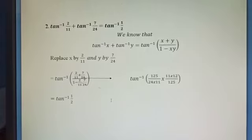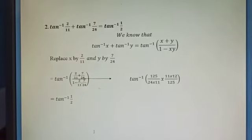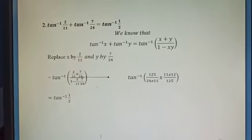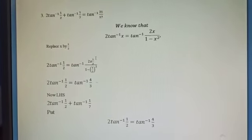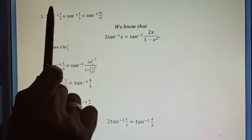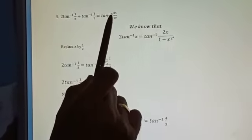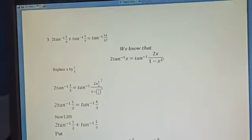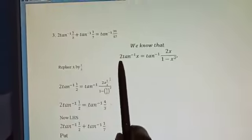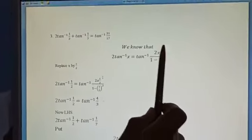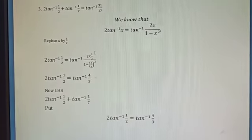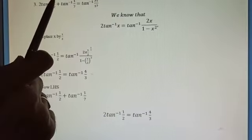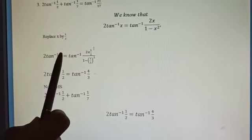Now let us move to the third problem, which is the fourth problem in the book. This is similar to the second problem with a slight difference. We need to prove: 2·tan⁻¹(1/2) + tan⁻¹(1/7) = tan⁻¹(31/17). We know that 2·tan⁻¹(x) = tan⁻¹(2x / (1 - x²)). We will replace x with 1/2.